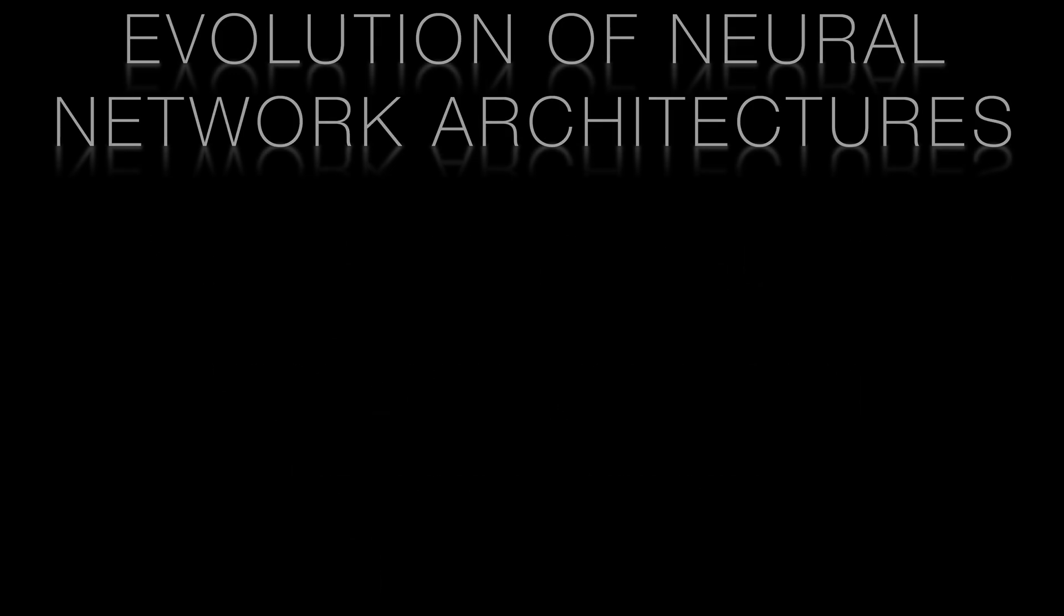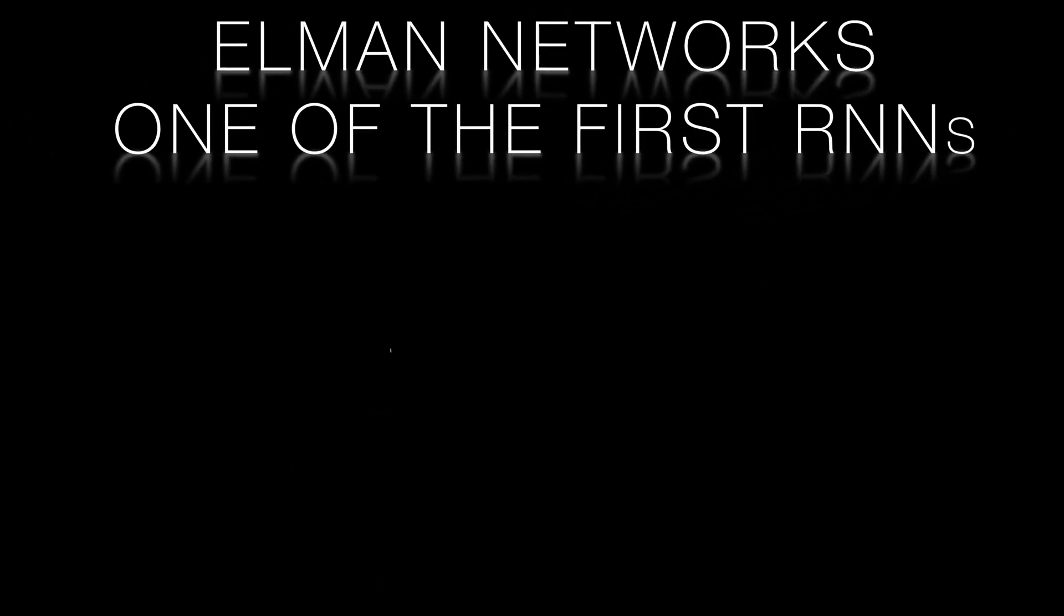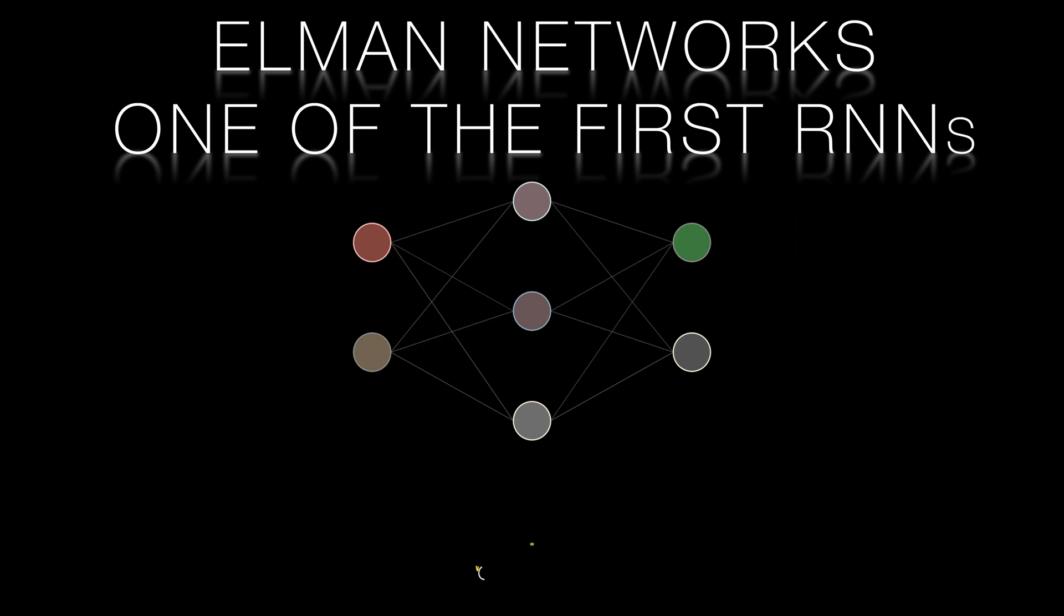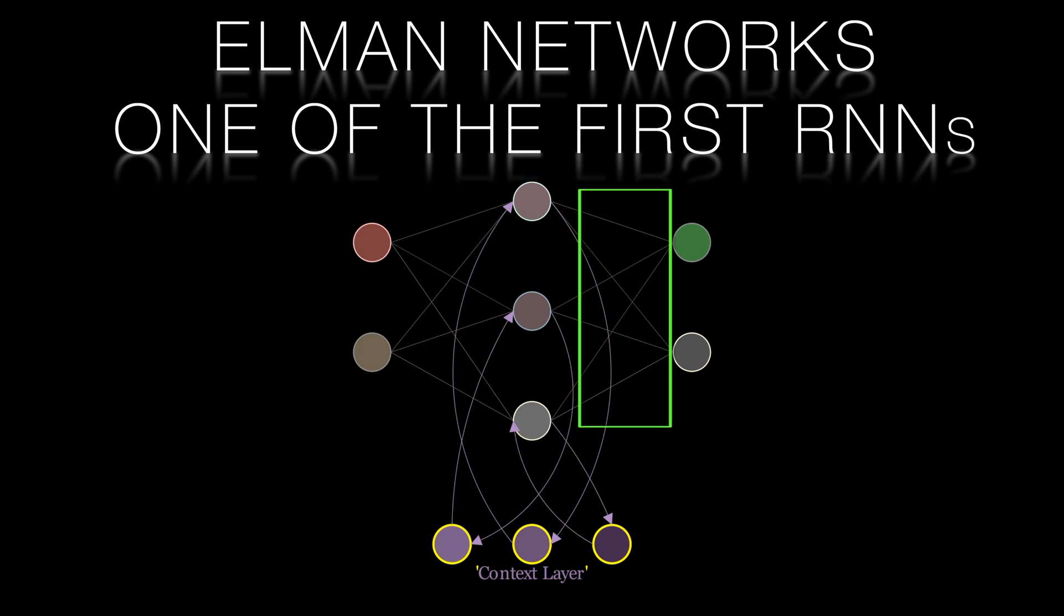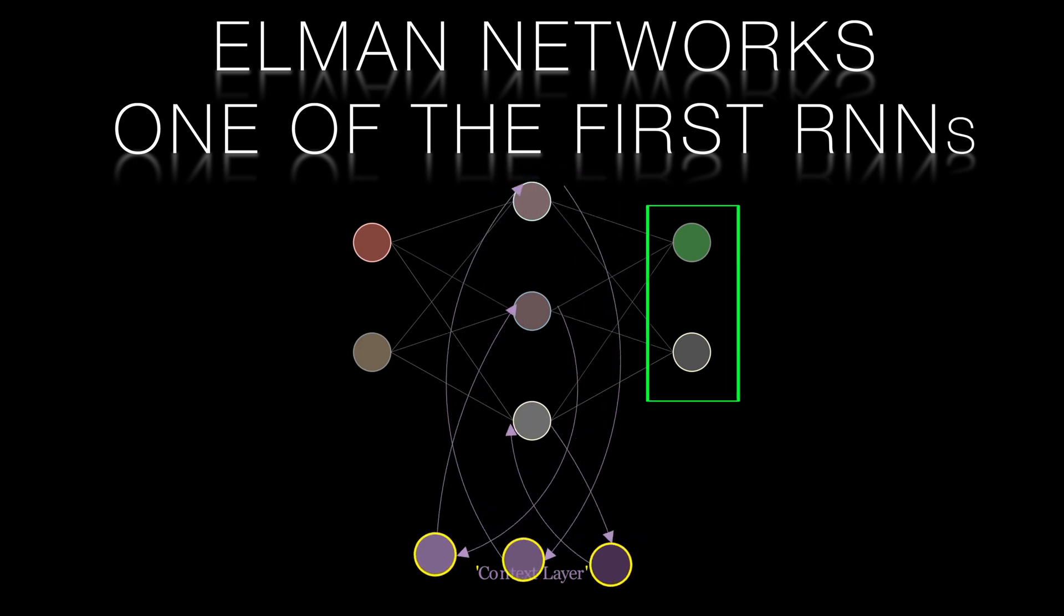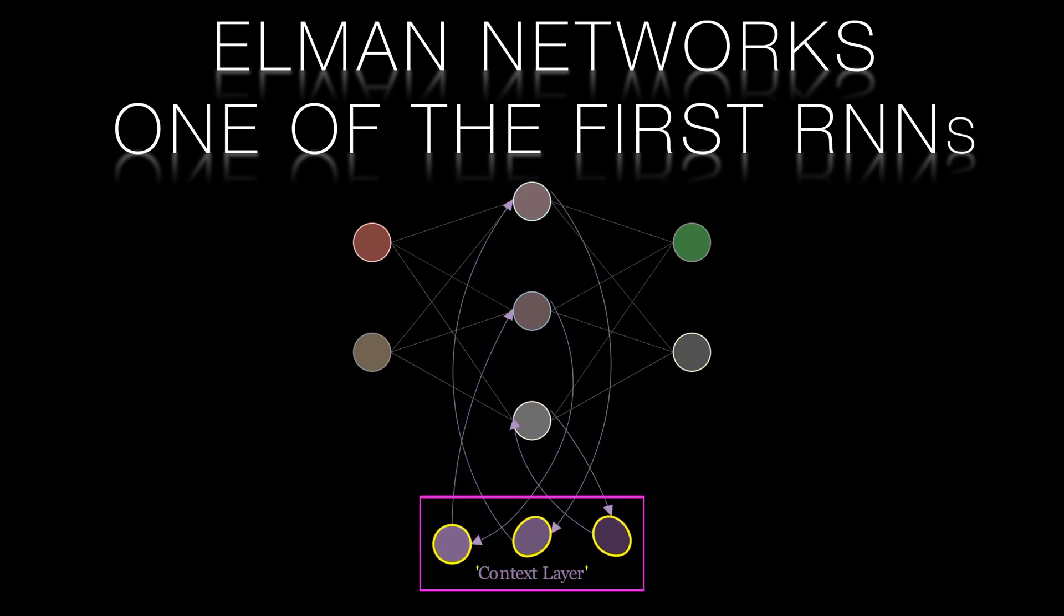Let's start by reviewing Elman networks introduced by Jeff Elman in 1990. Elman models are a type of recurrent neural network designed to handle sequential data. They consist of an input layer, hidden layers, and an output layer with feedback connections within the hidden layers.